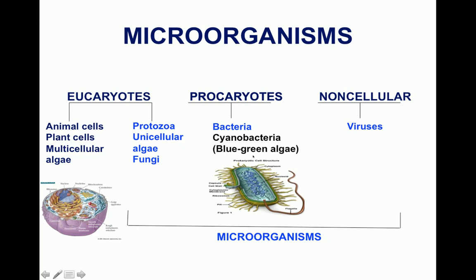These microbes have been divided into two groups: eukaryotic cells and prokaryotic cells. Viruses are a non-cellular group - obligatory intracellular parasites not capable of independent existence. 'Eu' means true and 'karyoid' means nucleus, so eukaryotes are cells with a true nucleus surrounded by a nuclear membrane separating it from the cytoplasm. This includes protozoa, unicellular algae, fungi, animal cells, plant cells, and multicellular algae.